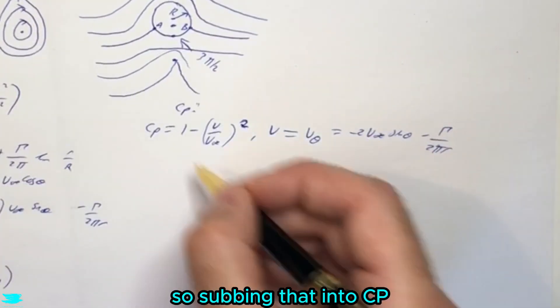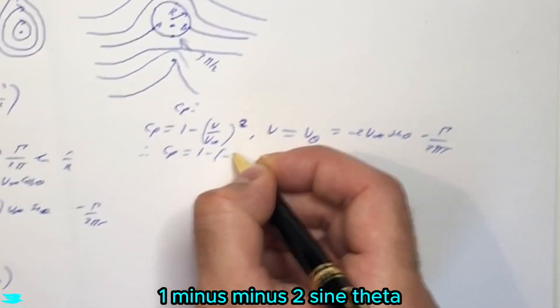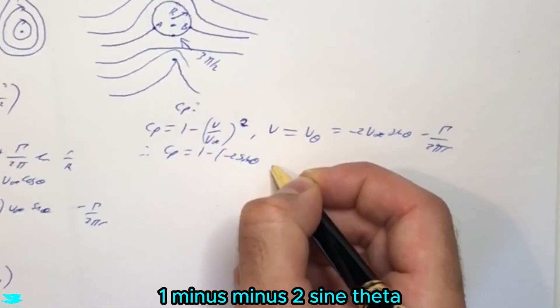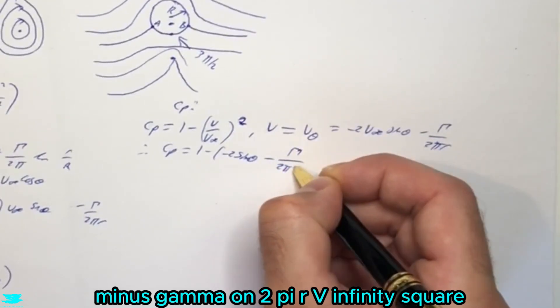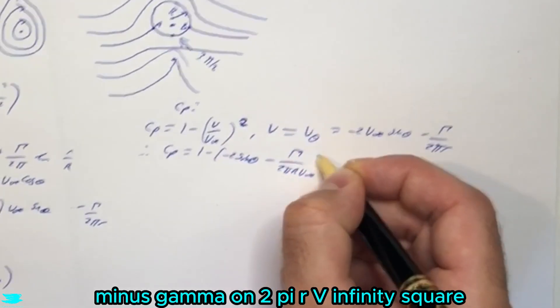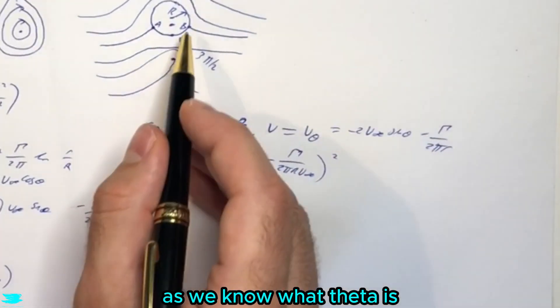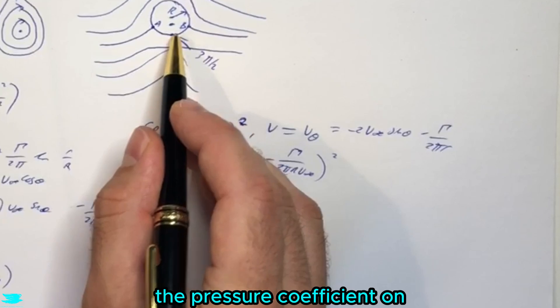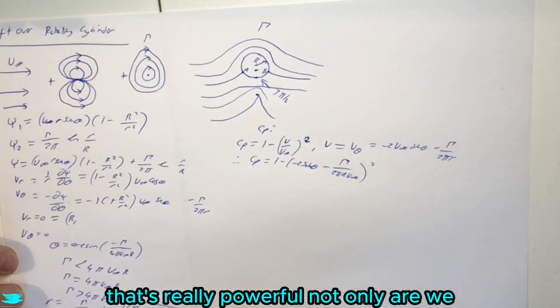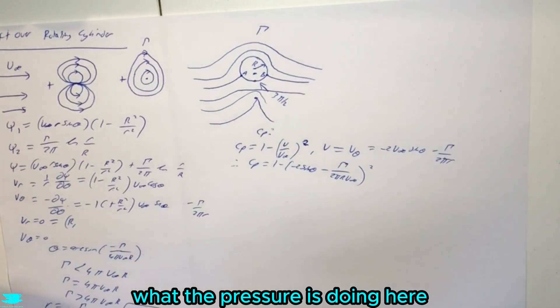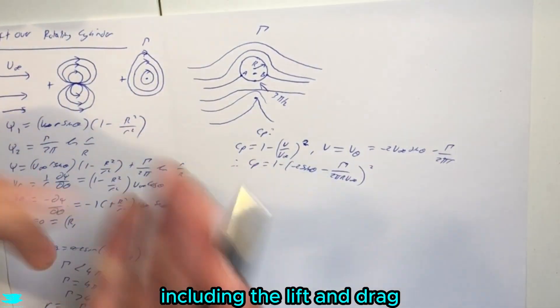So subbing that into Cp, we then get Cp equals 1 minus minus 2 sine theta minus gamma on 2 pi r v infinity squared. So that means that as long as we know what theta is, we can calculate what the pressure coefficient on this entire cylinder surface is. That's really powerful. Not only are we getting general information about what the pressure is doing here, we can then calculate all other sorts of quantities, including the lift and drag.